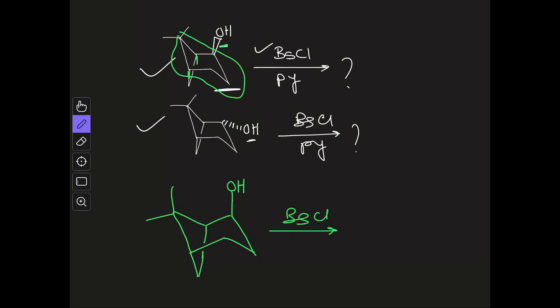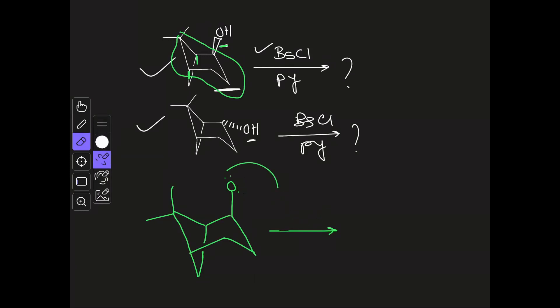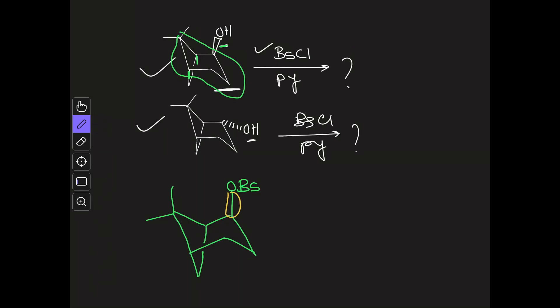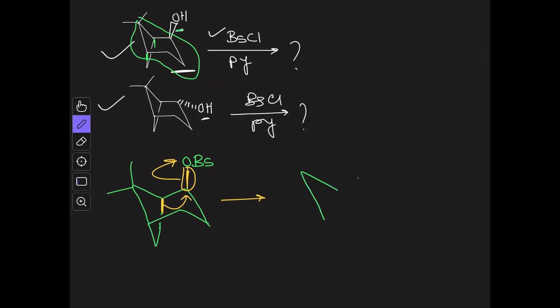When this is treated with BsCl, similarly to tosyl chloride, the oxygen attacks on the Bs and what you get — after treatment with BsCl in the presence of pyridine — is the OBs group. Now you have to find the bond that is anti-parallel to this particular bond, so that bond can displace the OBs. These two bonds are both axial, so they are anti-parallel to one another, and this bond can migrate to displace the OBs group. From that you get a bridging carbocation.